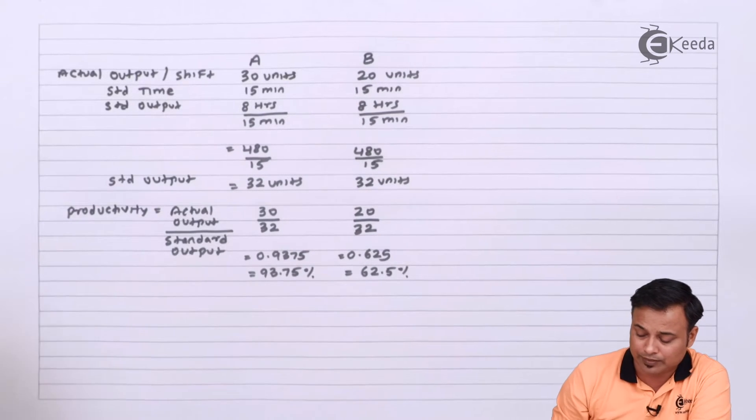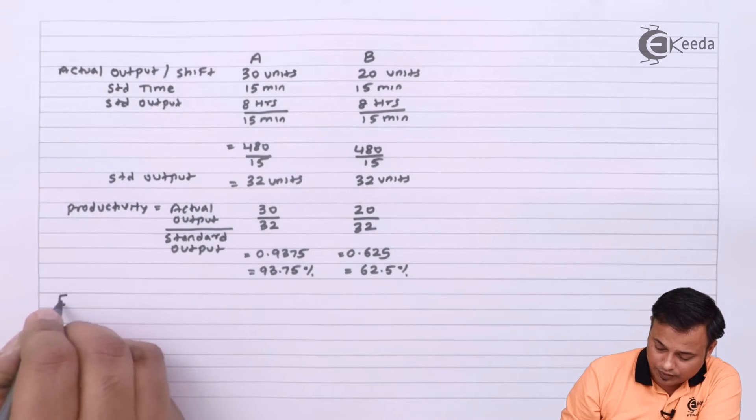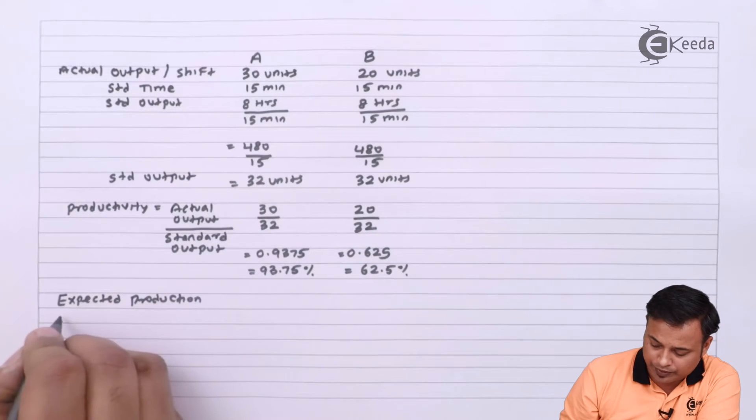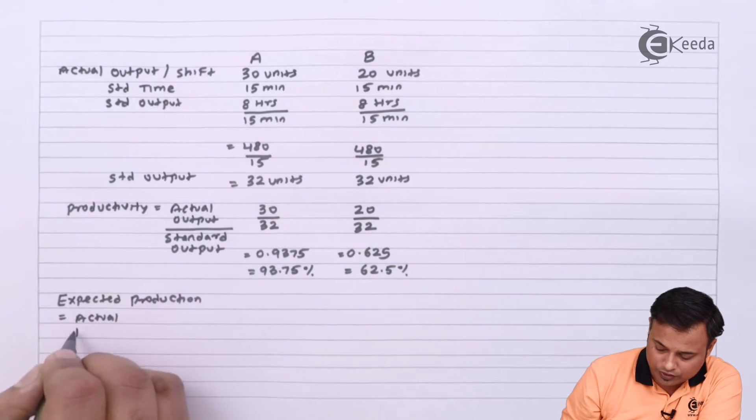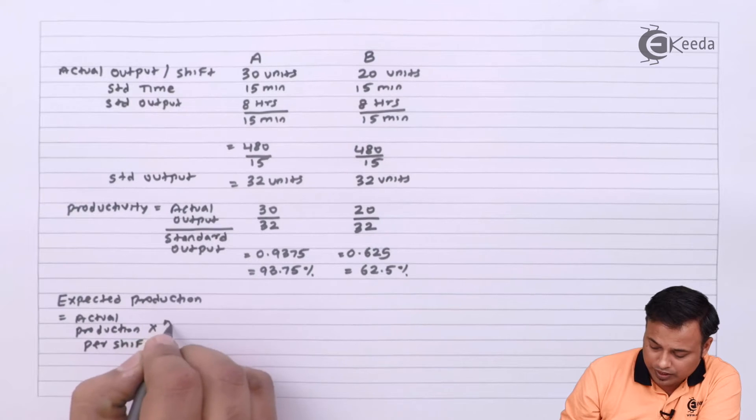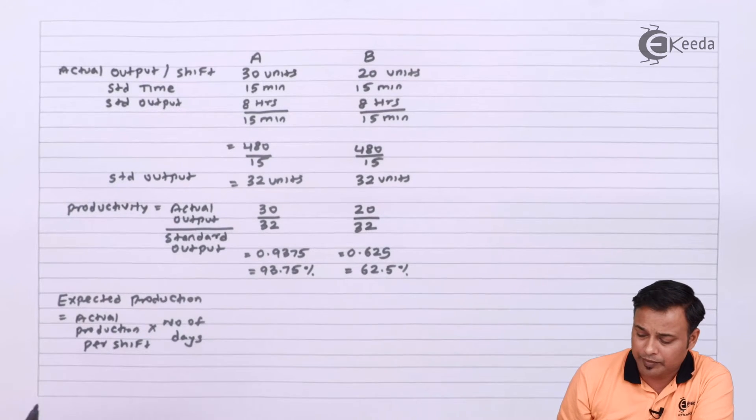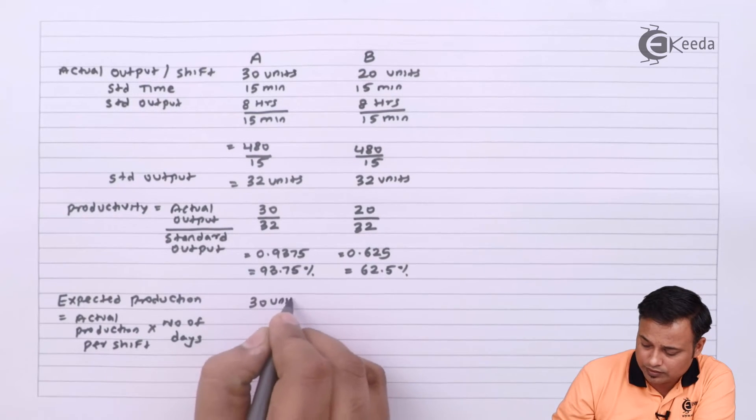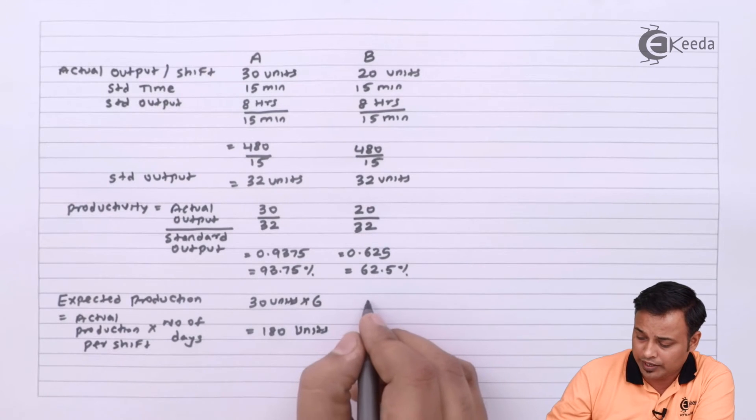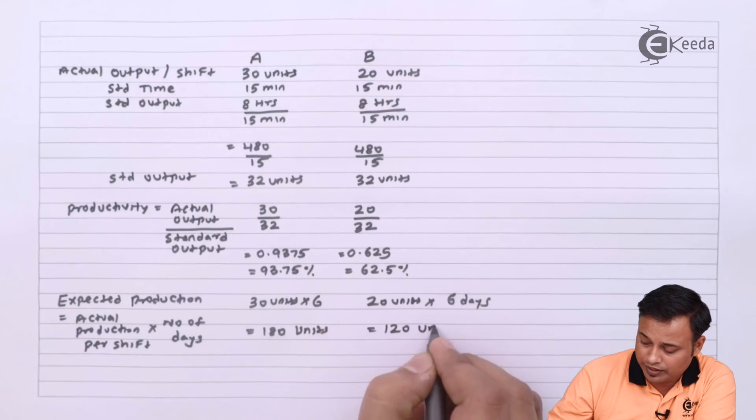That was the first part, we calculated the productivity for each of the two industries. The second part is asking us the expected production. Expected production is equal to actual production per shift multiplied by number of days. So for 6 days it will become 180 units and 120 units.